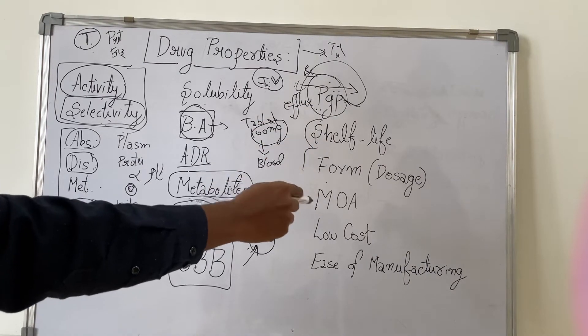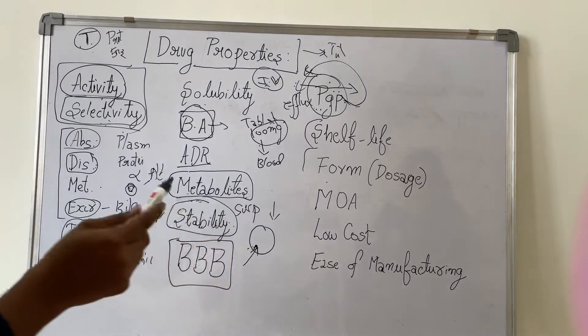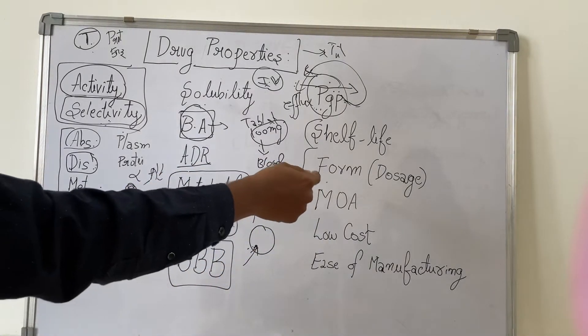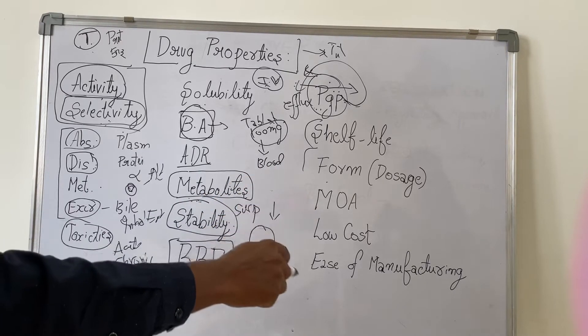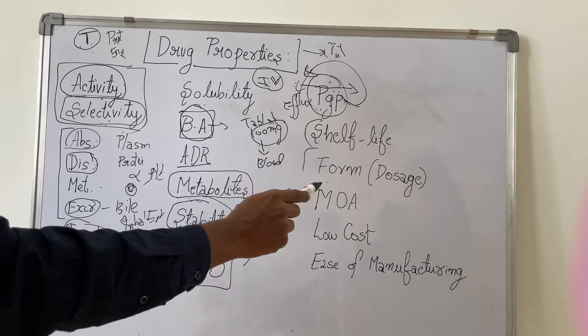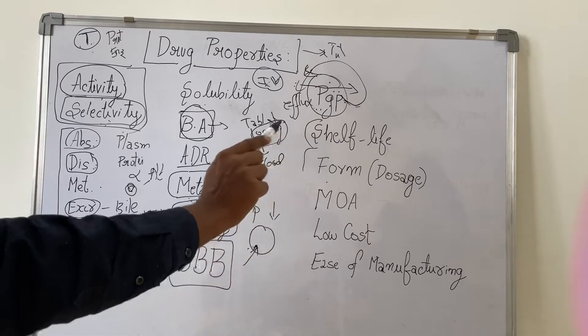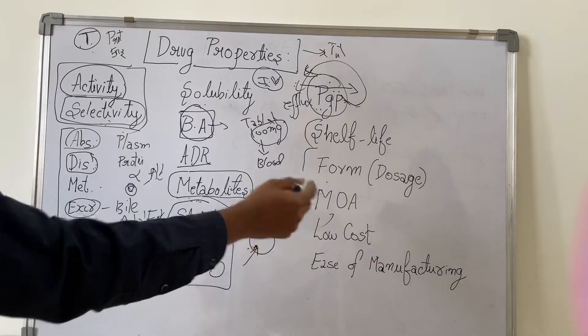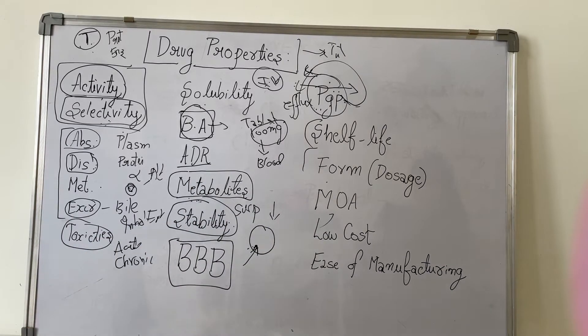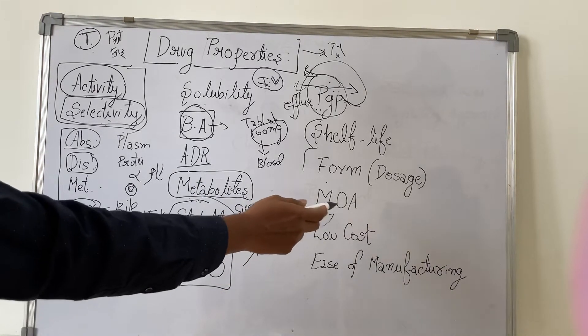If it is not possible, they will go for other forms. Depending on the action that is required, for example certain drugs may require fast action, they may change the dosage form. But usually every company will try as much as possible to make it into an oral tablet dosage form. Next one is mechanism of action, which is very important because we should know the clear and exact mechanism of action of a drug.